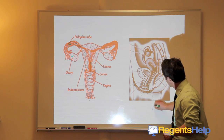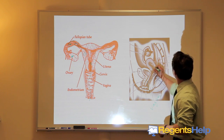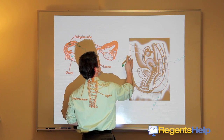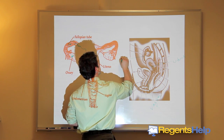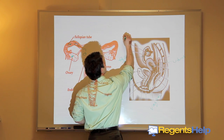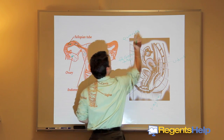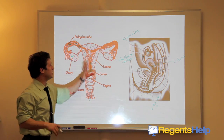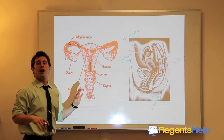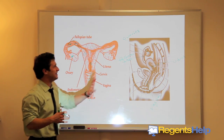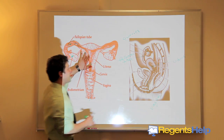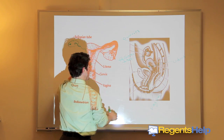I'll label them for you: this is the vagina, that's the uterus, these are the fallopian tubes, and the ovaries are on top of the fallopian tubes. Pause the video and take a look at these two images side-by-side to get an idea of what each reproductive organ looks like. If I were a fertilized egg, I'd be implanting right there on the uterus.